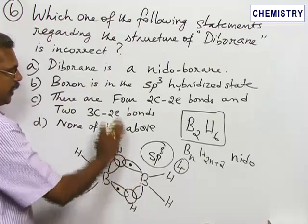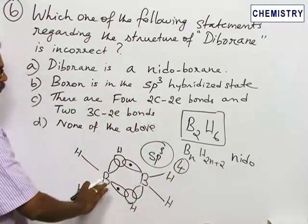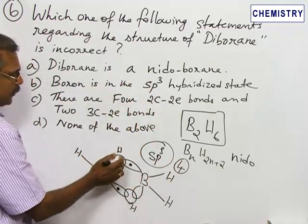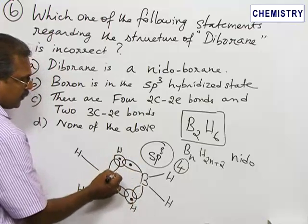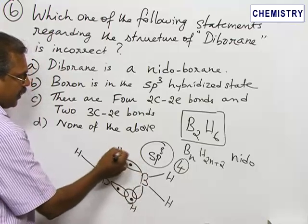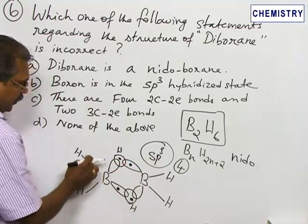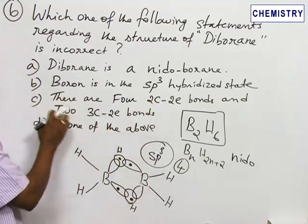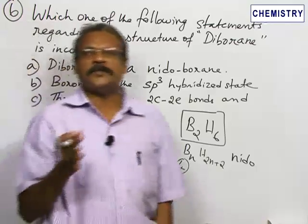These two banana bonds are three-center two-electron bonds: boron is one center, hydrogen is the second center, and the other boron is the third center. Each hydrogen contributes one electron. The remaining four bonds — the terminal B-H bonds — are two-center two-electron bonds. Statement C is also correct. Since all three statements are correct, none of the statements is incorrect, so the answer is option D.